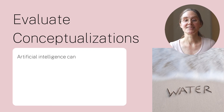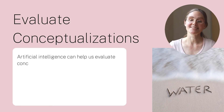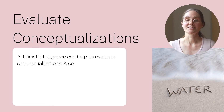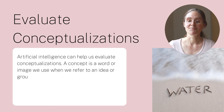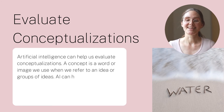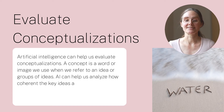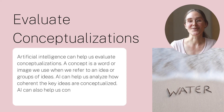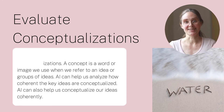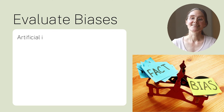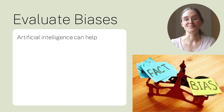Artificial intelligence can help us evaluate conceptualizations. A concept is a word or image we use when we refer to ideas or groups of ideas. Artificial intelligence can help us analyze how coherent the key ideas are conceptualized, and can of course also help us conceptualize our ideas coherently.